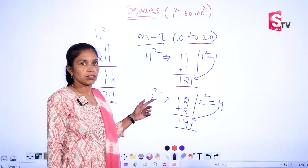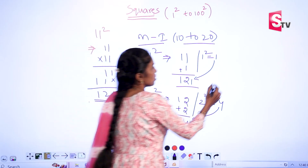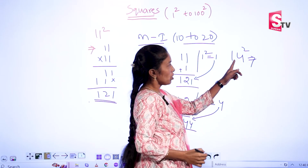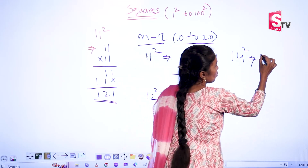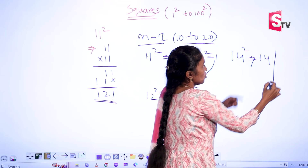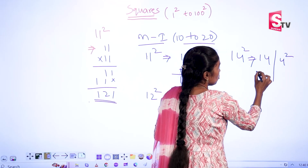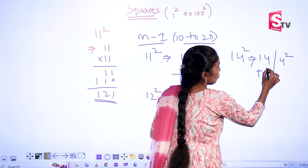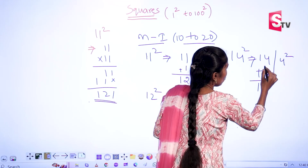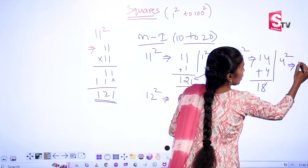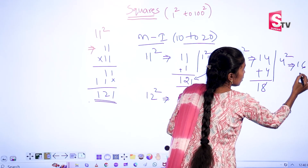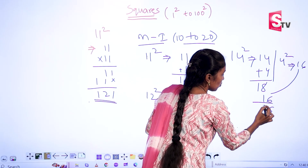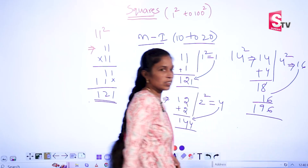This is a very simple method. Next, take 14 square. So 14 square — write down 14 as it is. Next, 4 square — write down separately. The last digit: 4 square, write down 4 here. So 4 plus 4 is 8. Then 4 square — write down this 16 here. 6, then 8 plus 1 is 9, so this is 196.